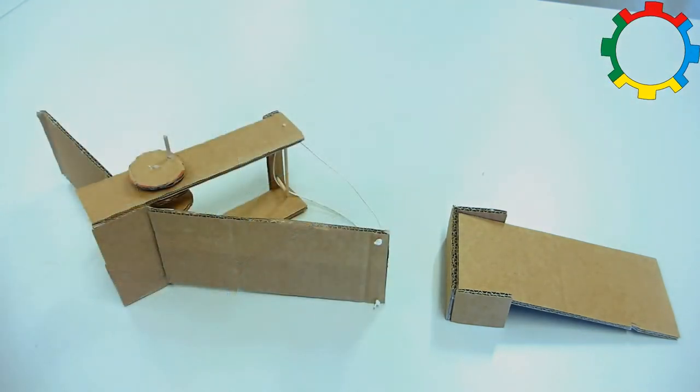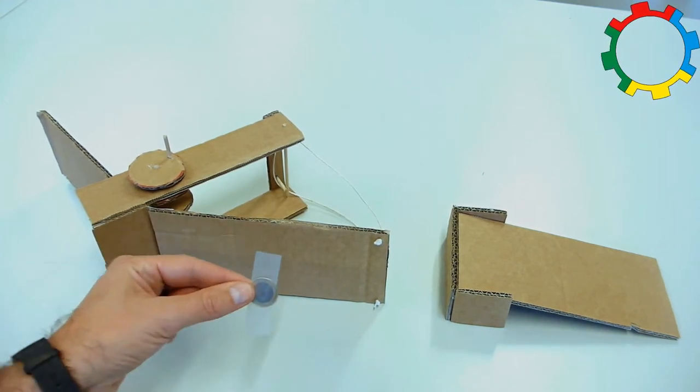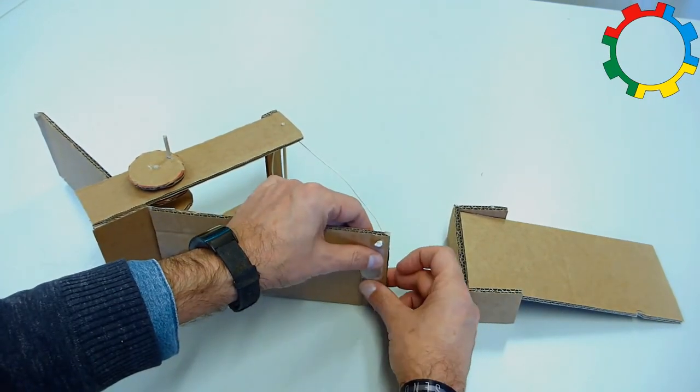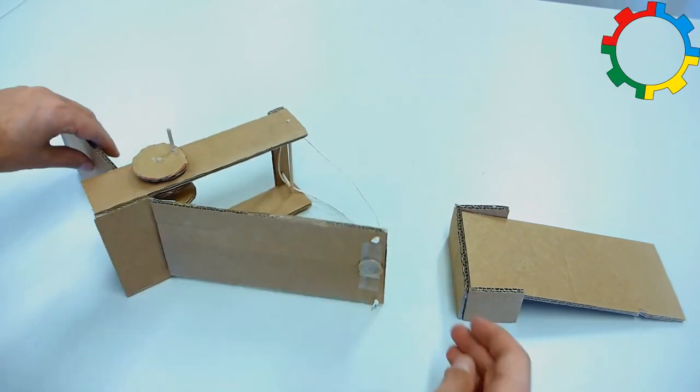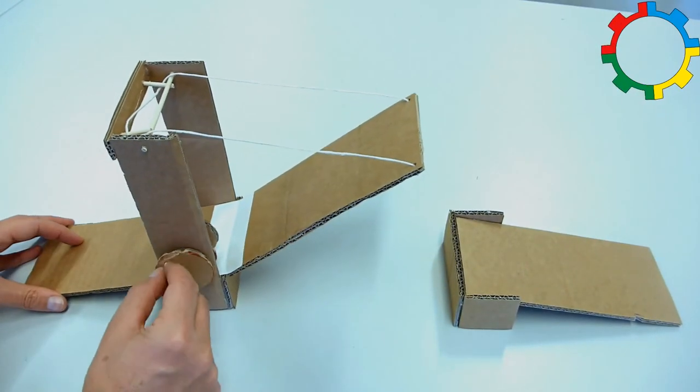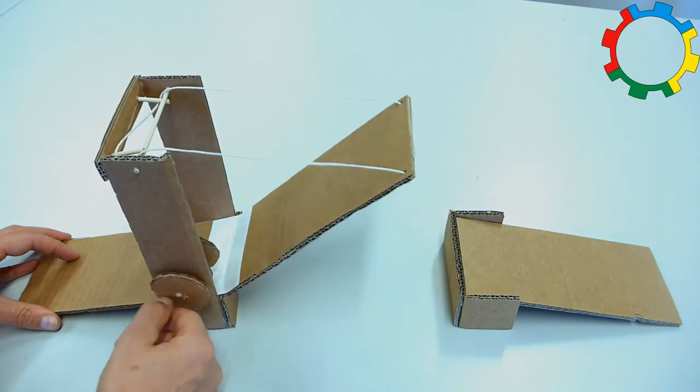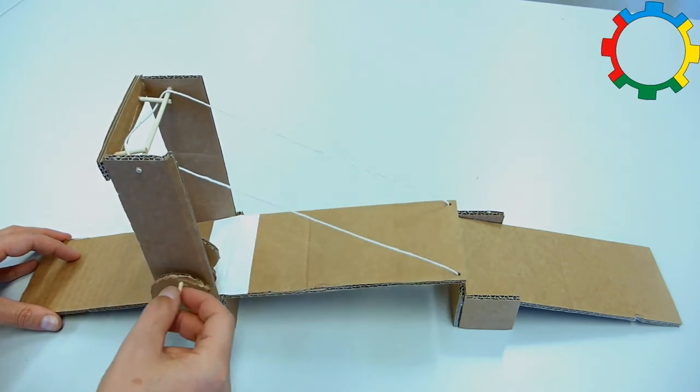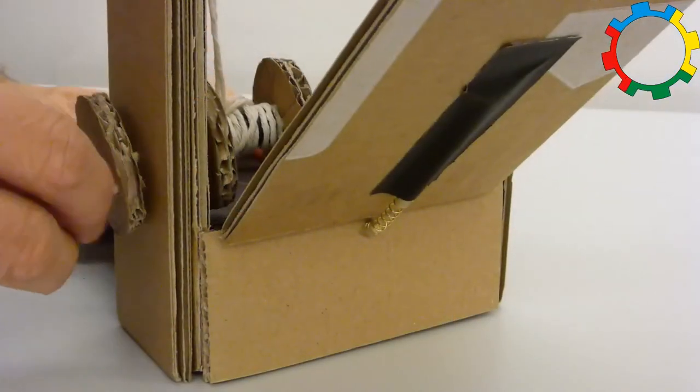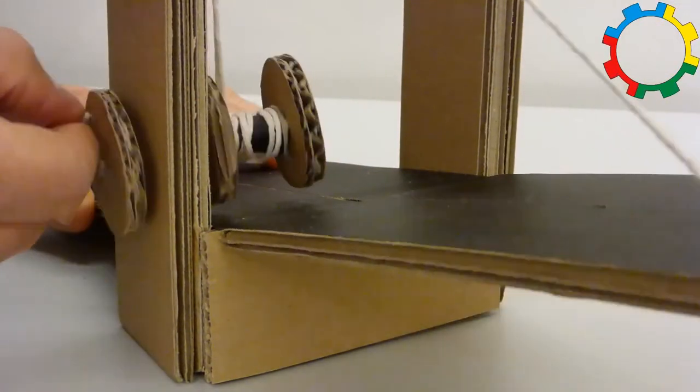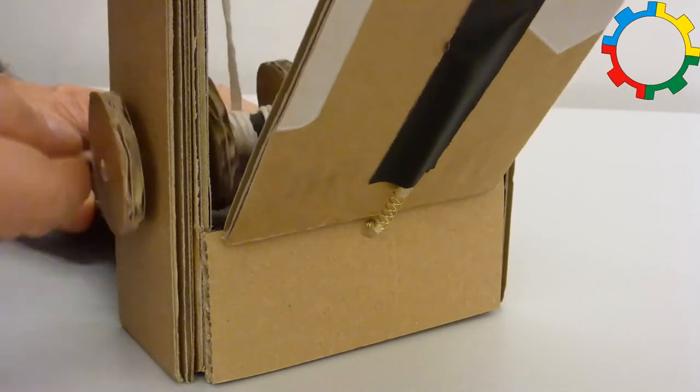If it does not move downwards by itself, you have to increase the weight. You can use sticky tape to attach a coin to the bottom of the bridge deck, or you can use a spring from a ballpoint pen to pull the bridge down.